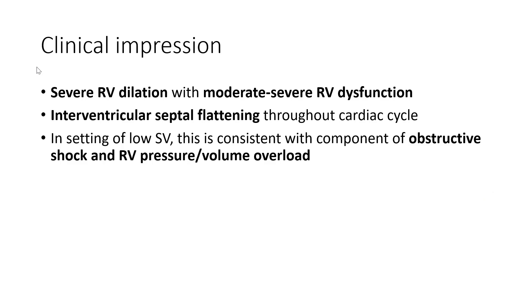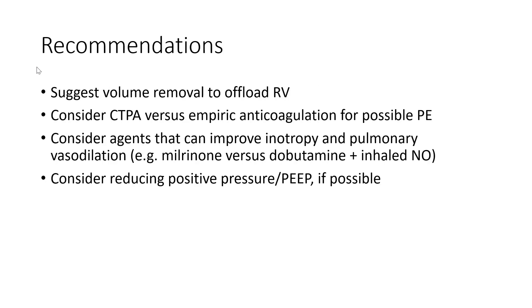Our clinical impression was that this patient had severe RV dilation with moderate to severe RV dysfunction. There was interventricular septal flattening throughout the cardiac cycle — both systole and diastole — and in the setting of low stroke volume, this was consistent with a component of obstructive shock and RV pressure-volume overload. Our recommendations were volume removal to offload the right ventricle and improve stroke volume, to consider CTPA or empiric anticoagulation for possible pulmonary embolus, to consider agents that improve inotropy and pulmonary vasodilation such as milrinone versus dobutamine, to consider inhaled nitric oxide, and to consider reducing positive pressure or PEEP to reduce RV afterload.